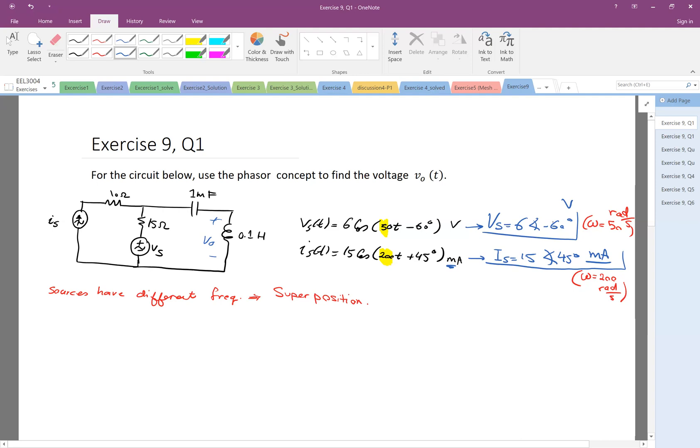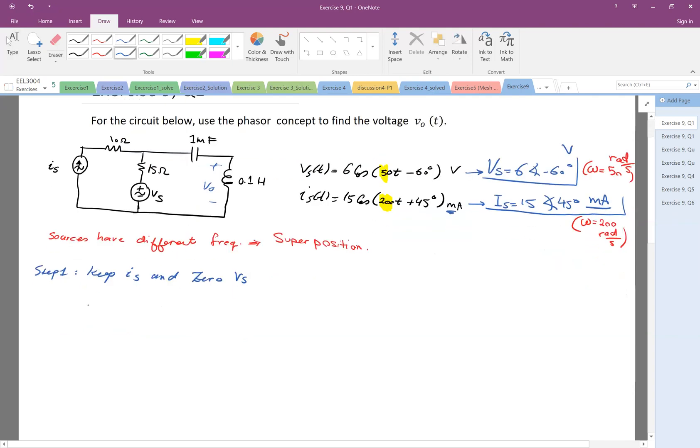So for the superposition, step one: I will keep one source at a time. Let's keep Is and zero all other sources, which in this case only is Vs. So I will draw the corresponding circuit in the phasor. I have my Is as 15 milliamp with the angle of 45 degrees. I have the 10 ohm, I have the 15 ohm. Then I have to zero the voltage source, and then the capacitor and inductor I have to find the impedances.